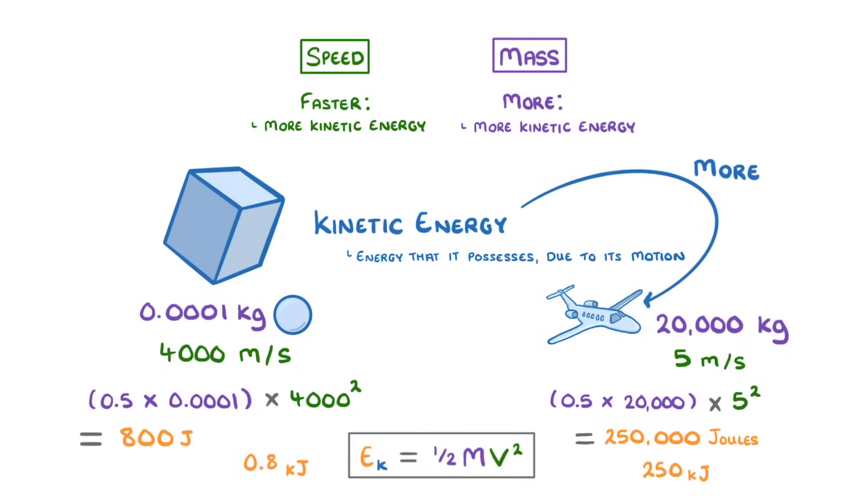So even though the particle was travelling much faster, it still had less kinetic energy, because its mass was so much lower.